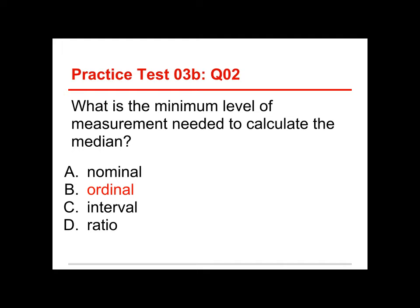So an ordinal statistic, which means first, second, third, fourth, as opposed to one, two, three, which are cardinal numbers, an ordinal statistic is sufficient to get the median. Nominal is not sufficient, because it doesn't put things into order, so you can't arrange them that way. You can get a median for the interval and ratio, but the question is about what is the minimum level, and the answer is ordinal.